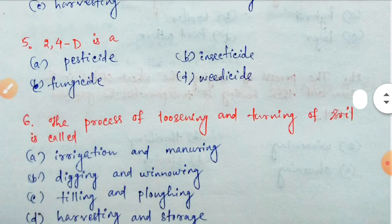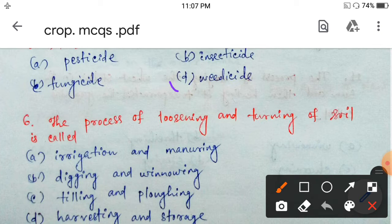Next question: 2,4-D is a — pesticide, insecticide, fungicide, or weedicide? It is a weedicide. Option D is the correct answer.